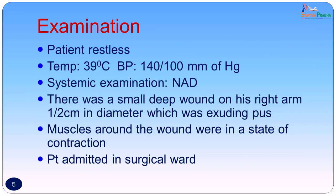On examination the patient was restless. The temperature was 39 degrees centigrade. The BP was slightly raised at 140 by 100 mmHg. Systemic examination showed no abnormality. There was a small deep wound on his right arm, half a centimeter in diameter, which was exuding pus. The muscles around the wound were in a state of contraction. The patient was admitted to the surgical ward.